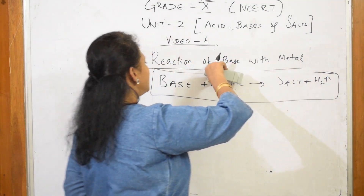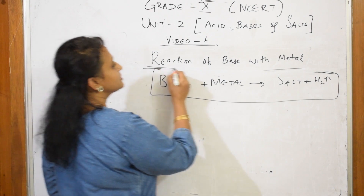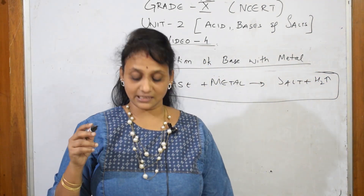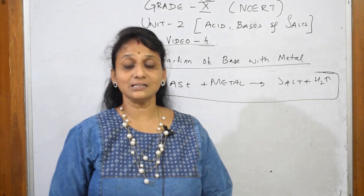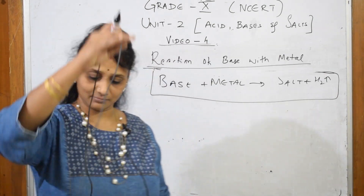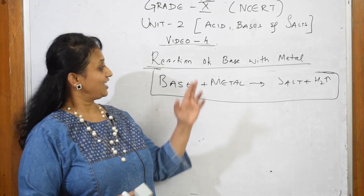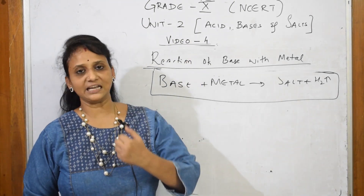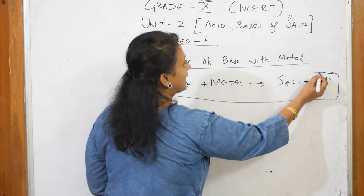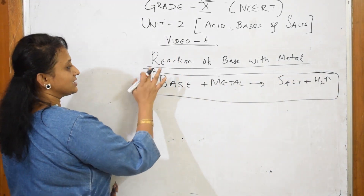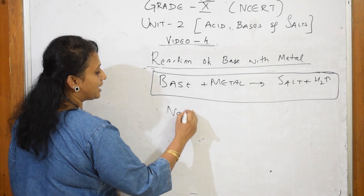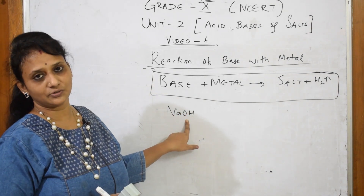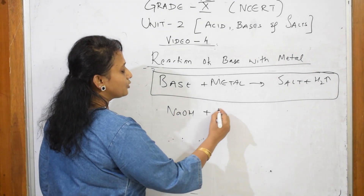My lines are not at all straight — it's okay, but for us the concept is important. We have learned a reactivity series where potassium is a highly reactive metal. All highly reactive metals follow the same story. Now I'm going to take a base — sodium hydroxide — which is a base because it has OH⁻ ions. After that, I'm going to take zinc.